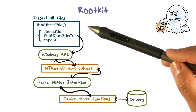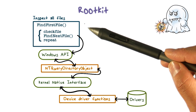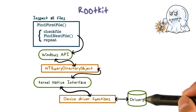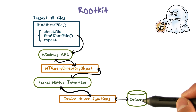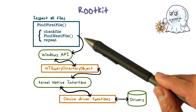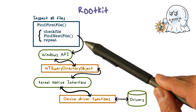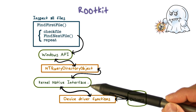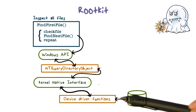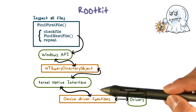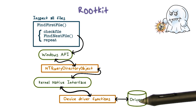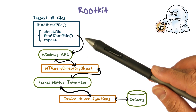Now, let's look at how a rootkit can hide a malware from the user when he looks at the files in a directory. Files and directories reside on the hard drive, which is controlled by the operating system, meaning that any access to the hard drive has to go through the operating system. Therefore, in order to get information about files in a directory, we have to go through operating system functions. In other words, operating system functions are called to look at information about files and directories on the hard drive and return the results back to the user.